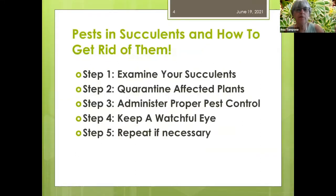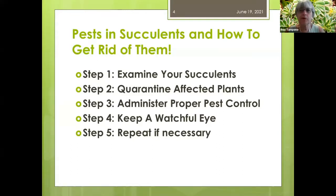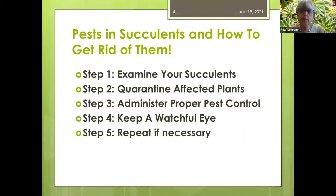If you have pests on your succulents and want to get rid of them, there are a few steps to take. First, as you're outside looking at your succulents, always examine them to see if something is amiss. If you find something that looks like a pest, quarantine it from your other plants. Then use the proper pest control, keep a watchful eye, and repeat the pest control if necessary.